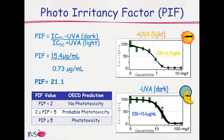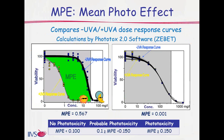In a worked example, with six replicate wells per concentration, the light plate IC50 is 0.73 µg/mL and the dark plate IC50 is 15.4 µg/mL. Dividing the dark IC50 by the light IC50 gives a PIF of 21.1. Since this value is greater than 5, the OECD prediction classifies this test material as phototoxic.